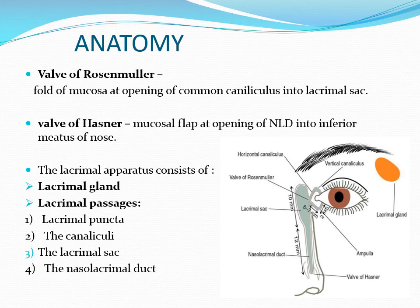The canaliculi are again vertical canaliculi, horizontal canaliculi, and a common canaliculus. The common canaliculus opens into the lacrimal sac and this opening is guarded by the valve of Rosenmuller, which is comprised of a fold of mucosa. Then the nasolacrimal duct opens into the inferior meatus of the nose and it is guarded by the valve of Hasner, which is also a mucosal fold.